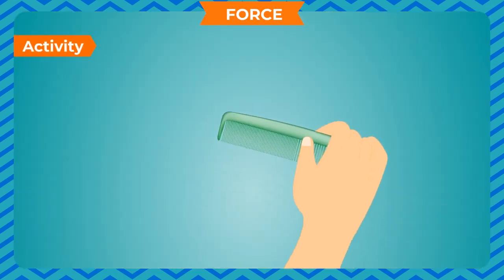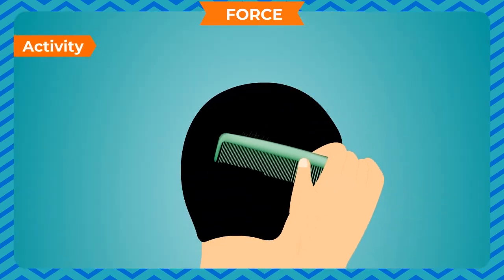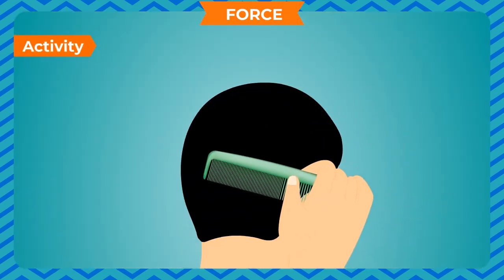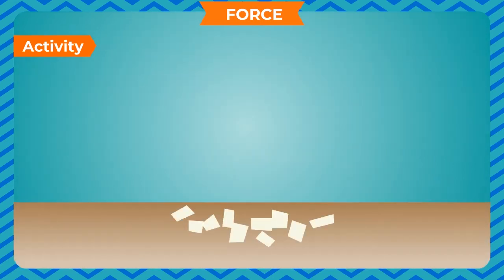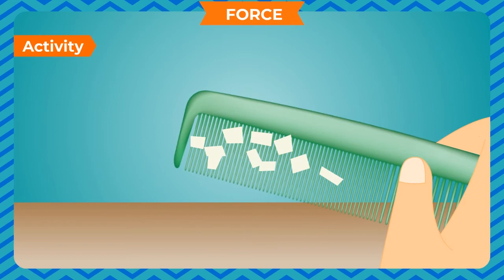Take a plastic comb and rub it on your dry hair for about a minute, then bring the rubbed comb near tiny pieces of paper. You will notice that the pieces of paper are attracted towards the comb. The force between the comb and the small pieces of paper is due to electrostatic force.